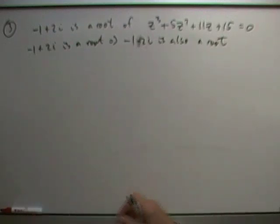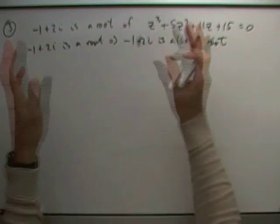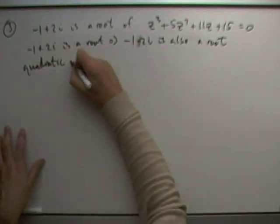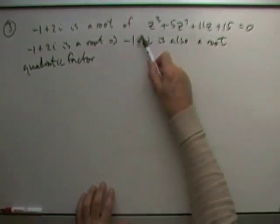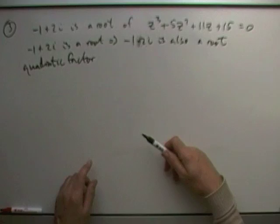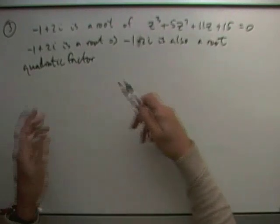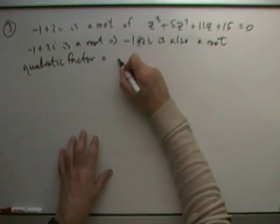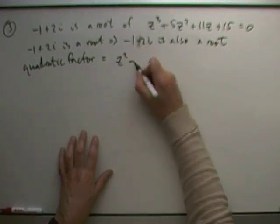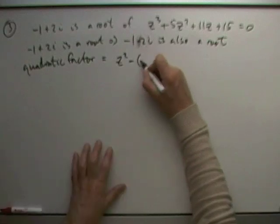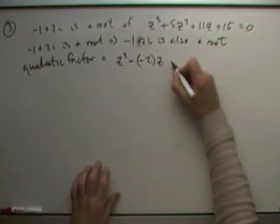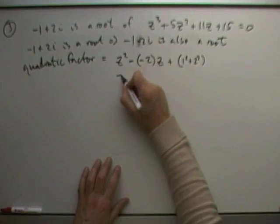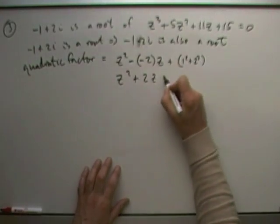So I'll reconstruct the quadratic factor. I'd have z squared minus the sum of the roots — that's negative one and negative one giving negative two z, because the plus 2i and minus 2i cancel — plus the product of the roots, which is just one squared plus two squared. So the quadratic factor is z squared plus 2z plus 5.